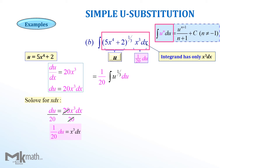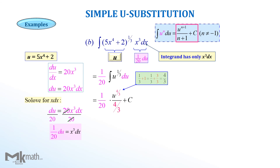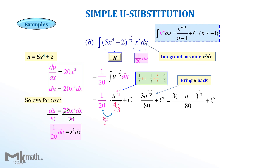Since we have the left side of the formula with n equal to one-third, we apply the formula to get one-twentieth times u to the four-thirds power over four-thirds plus arbitrary constant c. Simplifying gives 3 over 80 times u to the four-thirds power. Finally, bringing back the original function gives the solution: 3 over 80 times (5x to the fourth plus 2) to the four-thirds power plus c.